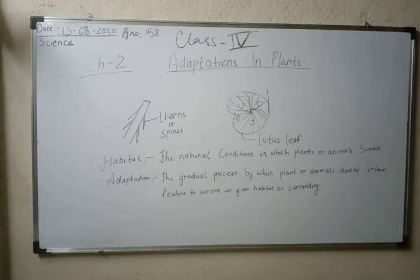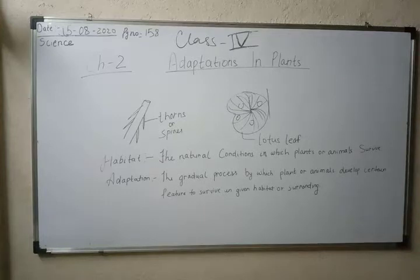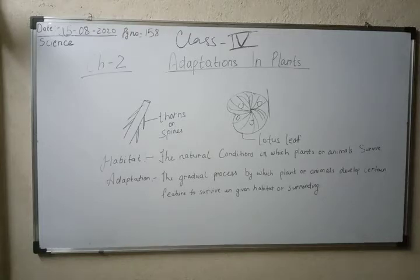Habitat is like a surrounding in which you live for a longer period and you are able to cope up in that surrounding — that is called your natural habitat. And what is adaptation? It is a gradual process by which plants or animals develop certain features to survive in a given habitat or surroundings. This is called adaptation.